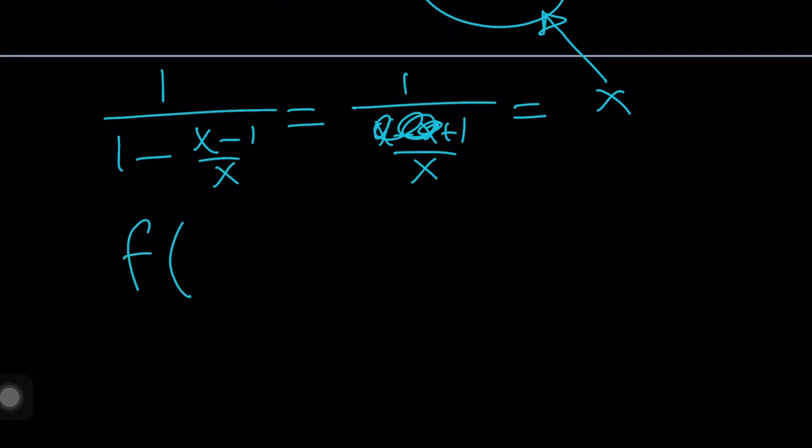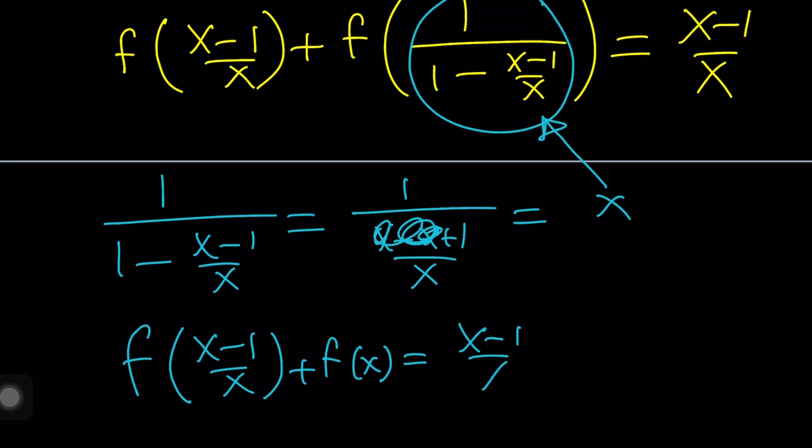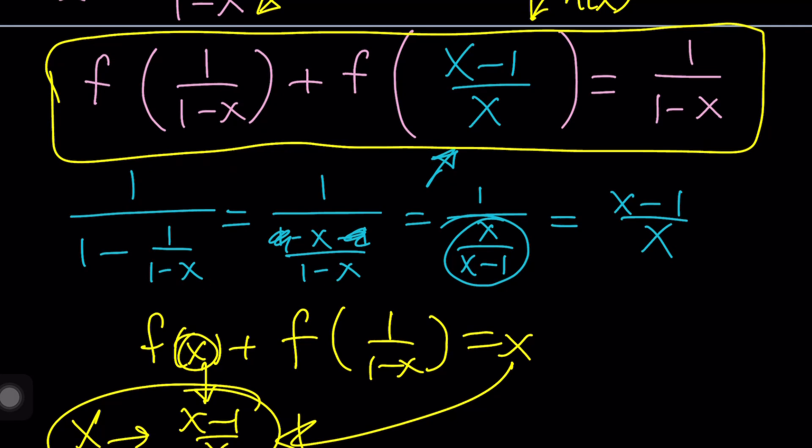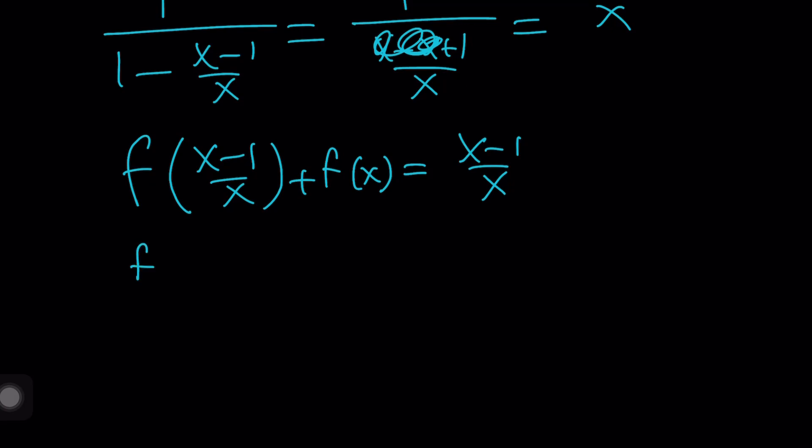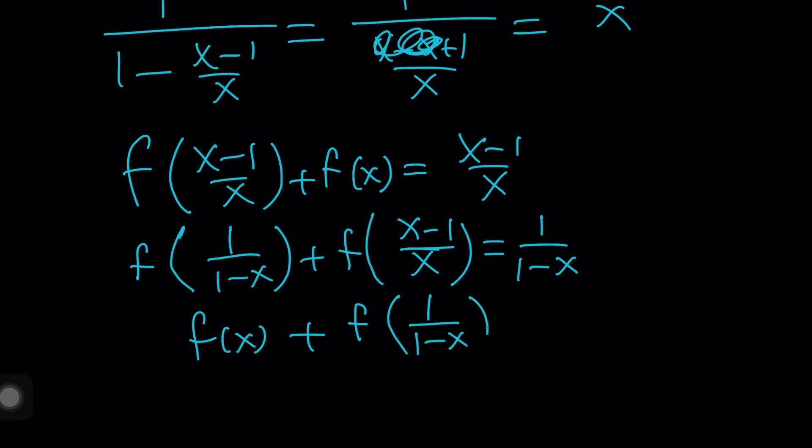f of x minus 1 over x plus f of x becomes x minus 1 over x. Great. That's just one equation. But we had another equation. We're going to bring that back over here. Let's go ahead and bring that equation down, and then we will put these all together. Ready? The equation that I got above was f of 1 over 1 minus x plus f of x minus 1 over x. That made a minus sign sort of. I don't like that. And the sum is equal to 1 over 1 minus x. Remember that? And the original equation was f of x plus f of 1 over 1 minus x equals x.